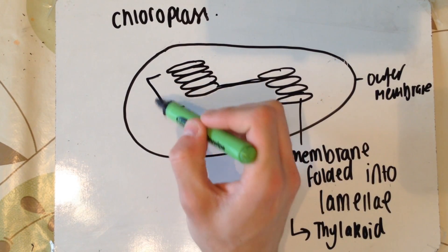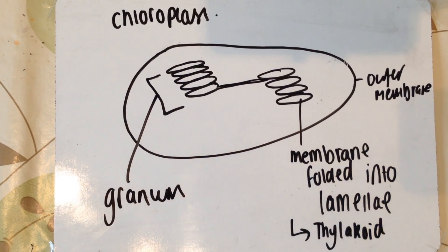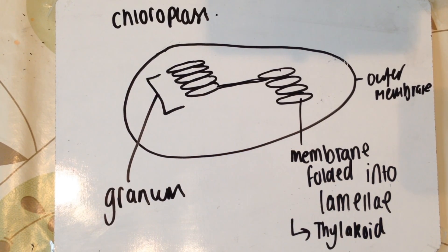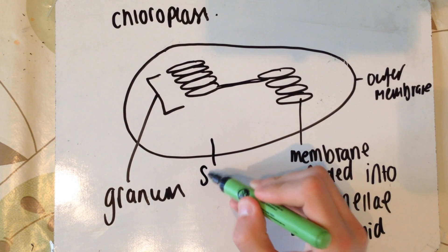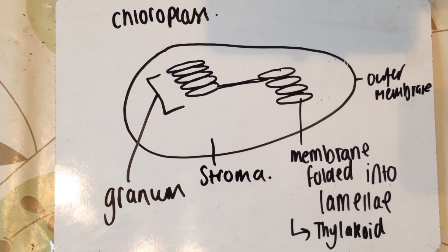A stack of these thylakoid discs is called a granum. Just remember a granum is many thylakoid discs, and each thylakoid, although you may see it called lamellae, basically that just refers to the folding. And the fluid-filled space in the middle is called a stroma.